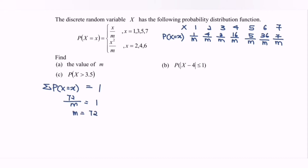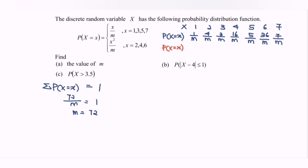Next, we substitute m = 72 into all the probabilities. So the probabilities become 1/72, 4/72, 3/72, 16/72, 5/72, 36/72, and finally 7/72.